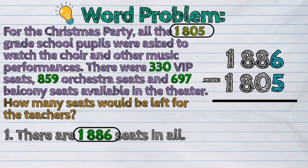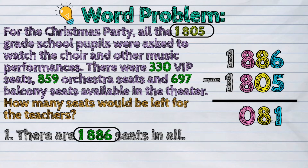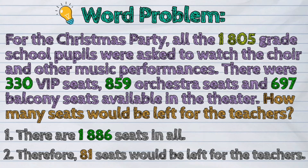The difference in the ones place is 1, in the tens place is 8, in the hundreds place is 0, and in the thousands place is 0. So, the total number is 81. Therefore, 81 seats would be left for the teachers.